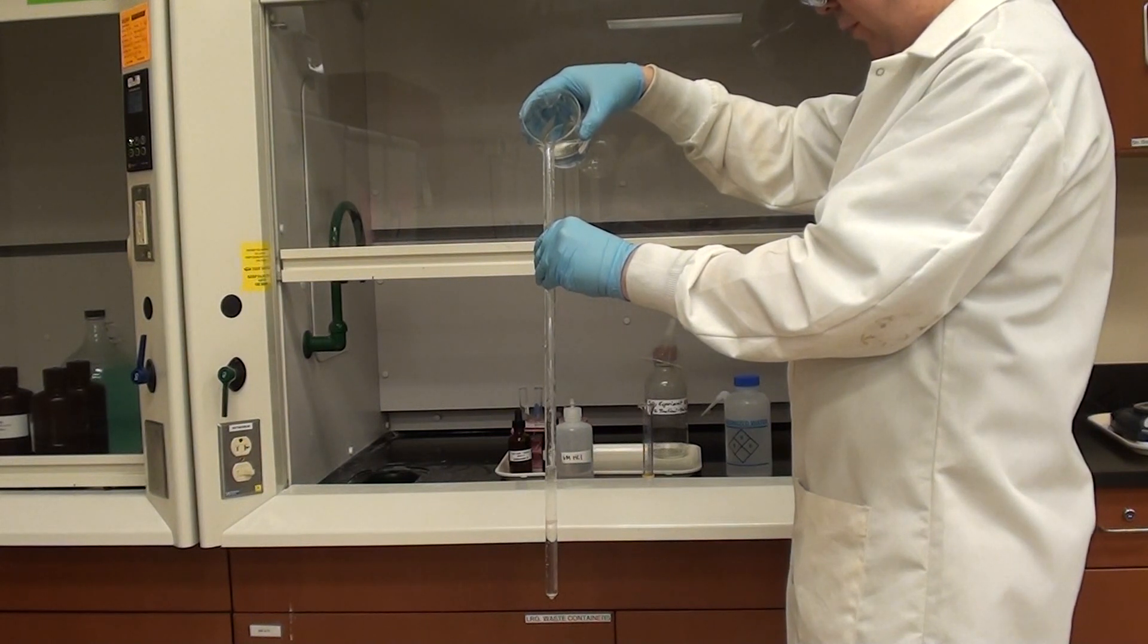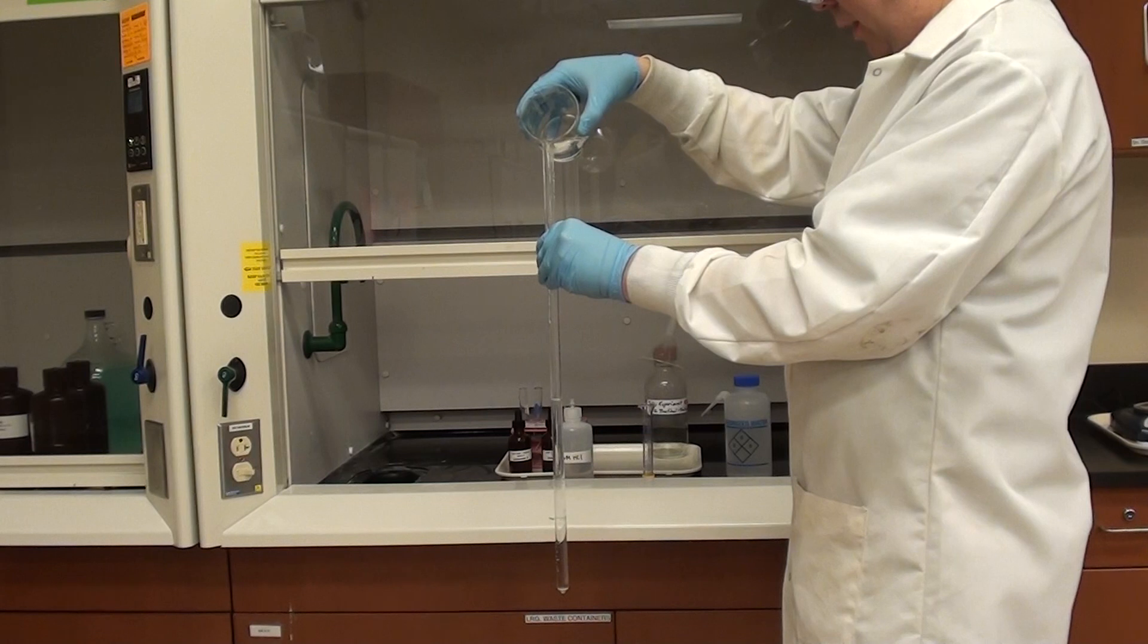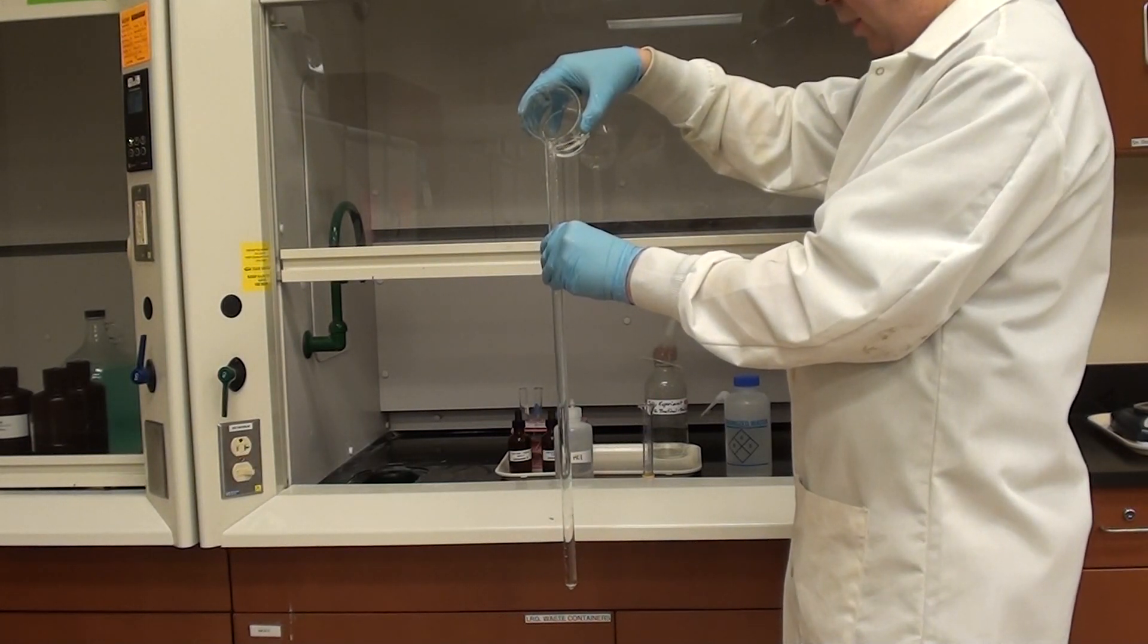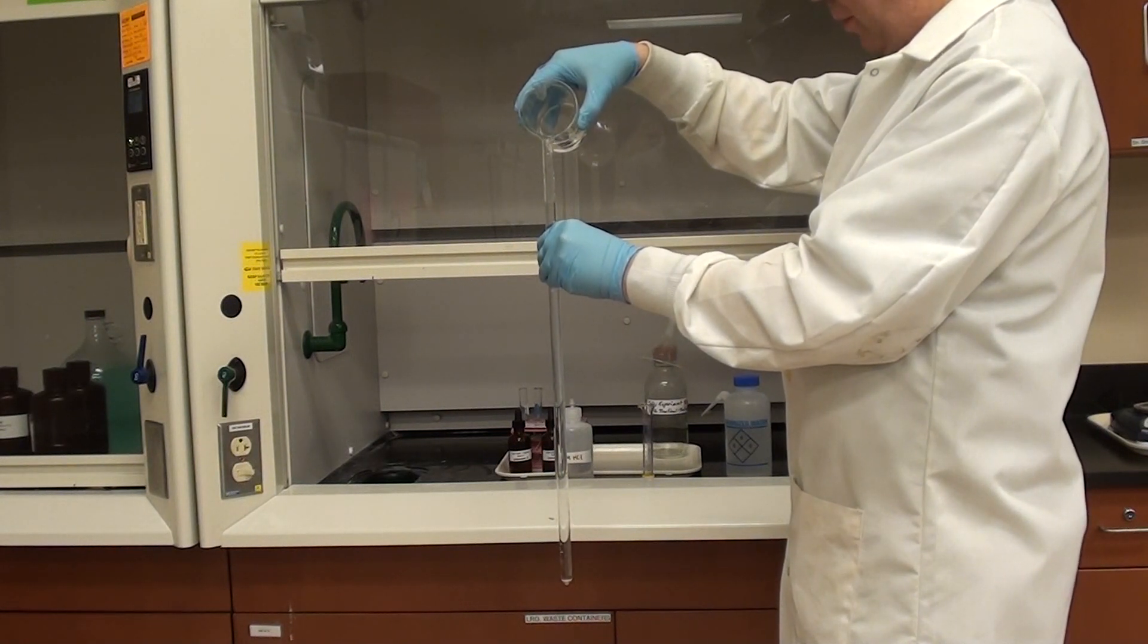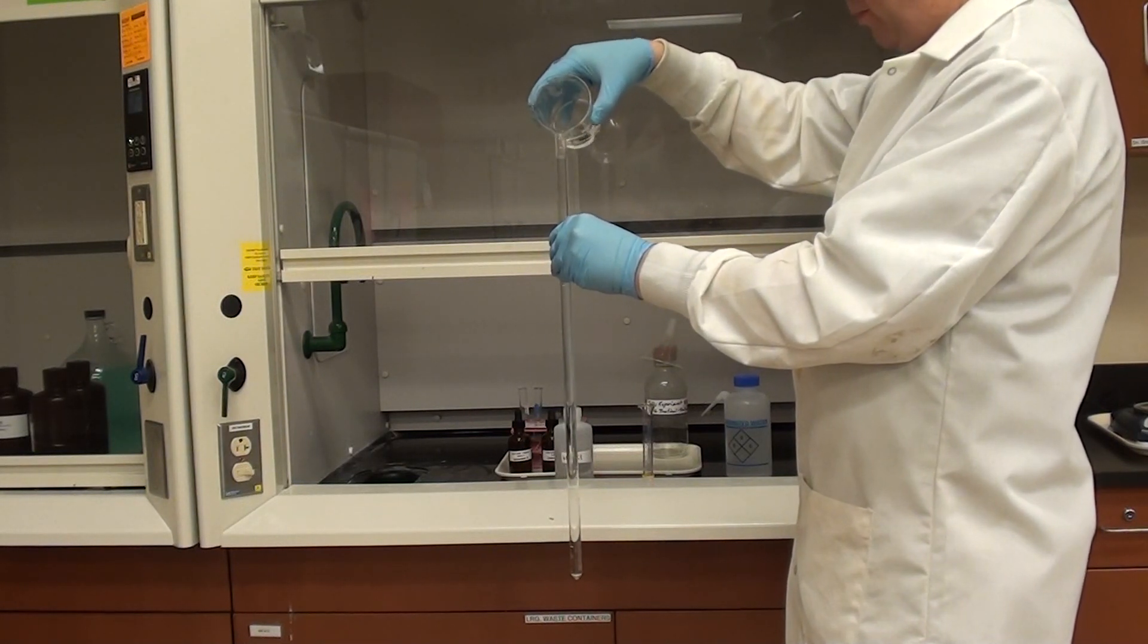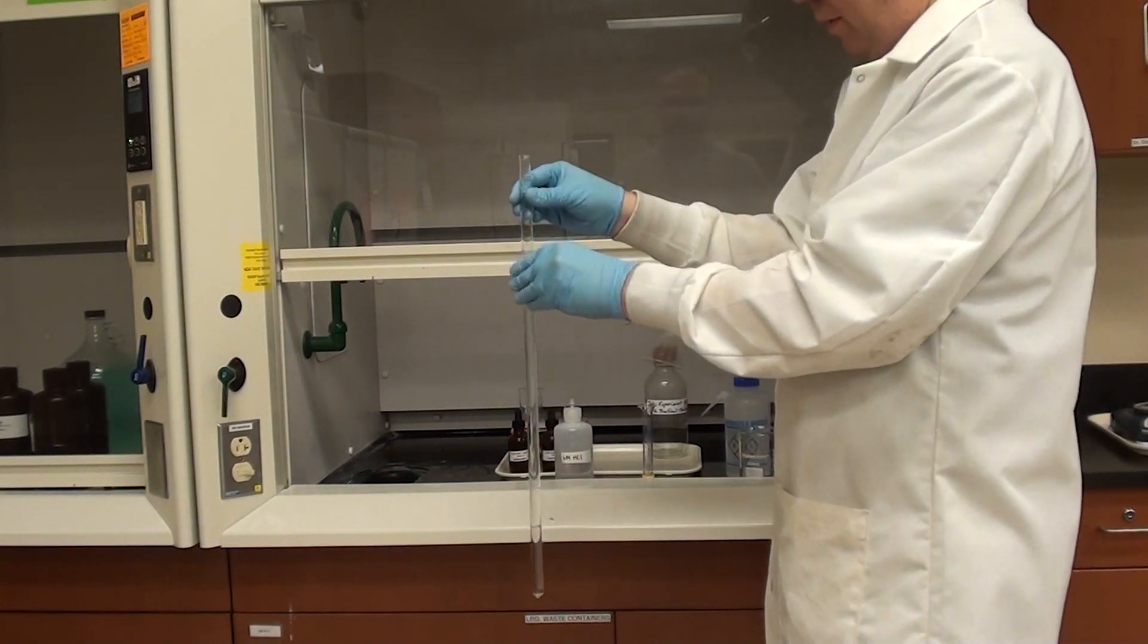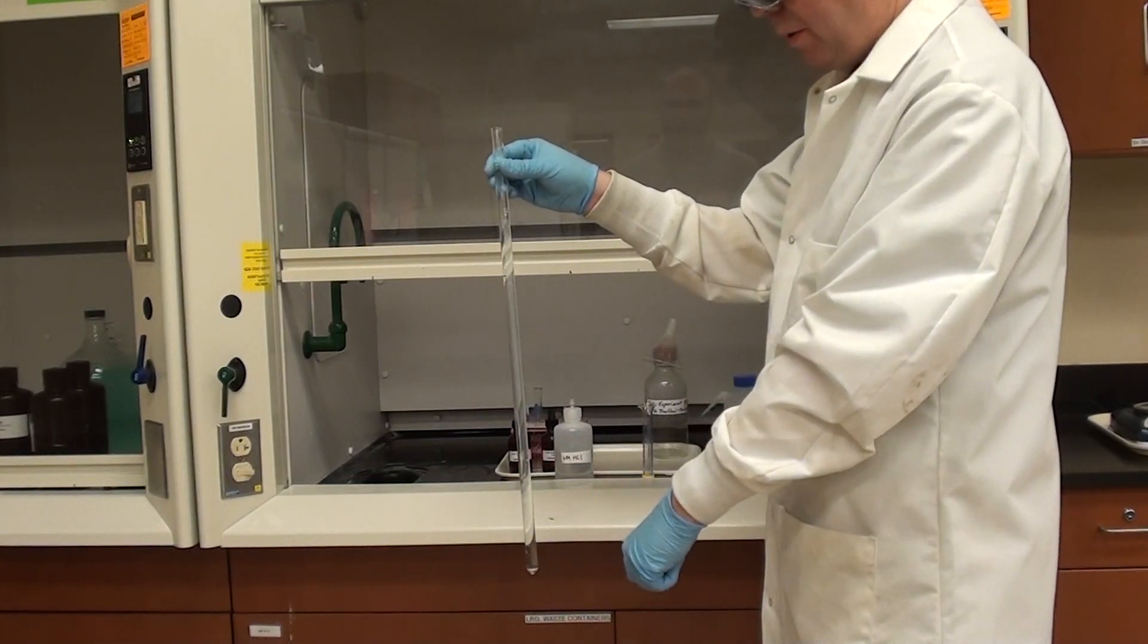Just do it fairly slowly at first and then we can fill it a bit faster as we go closer to the top. And you want to probably fill it maybe about an inch from the top, something like that. That'll be fine. We're going to put a stopper in there so we need a little bit of space there. We've got this and then we've got the HCl still on the bottom.